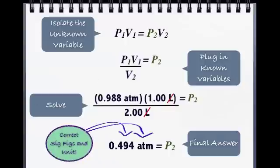Always check to make sure you have the correct number of sig figs. In this case, we need 3, because the lowest number of sig figs in our given information is 3. Plus, always check to make sure you have the correct unit. Since the question is asking for pressure, it makes sense that the unit we end up with is atm.